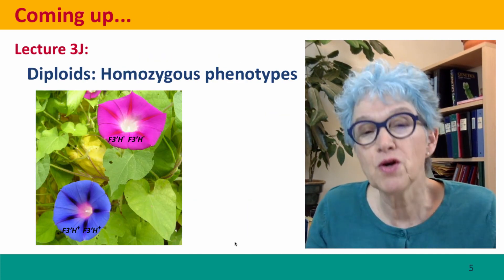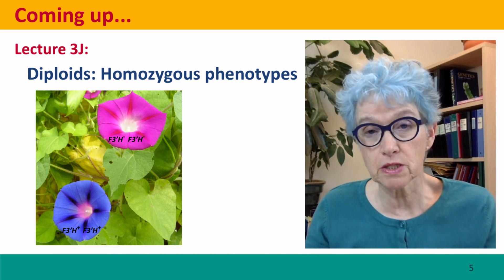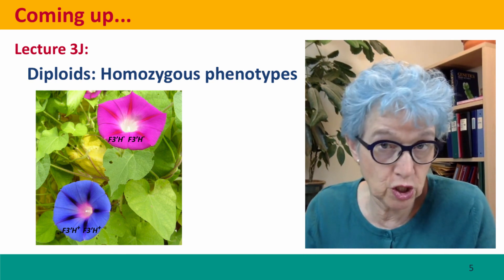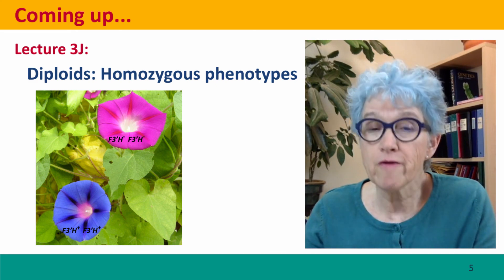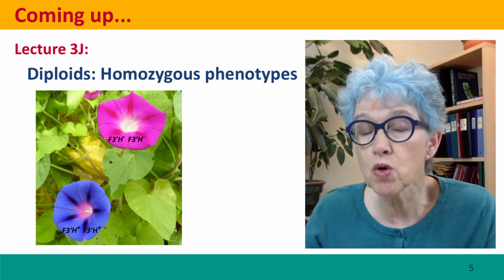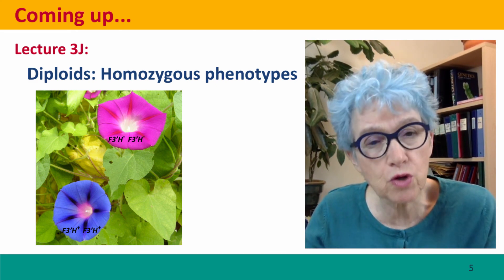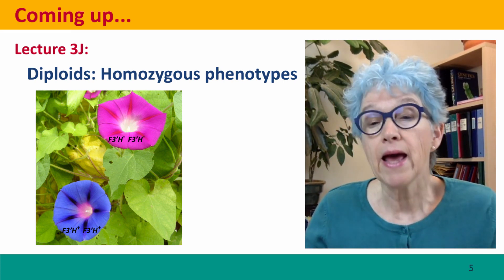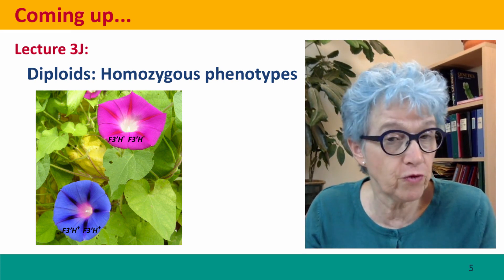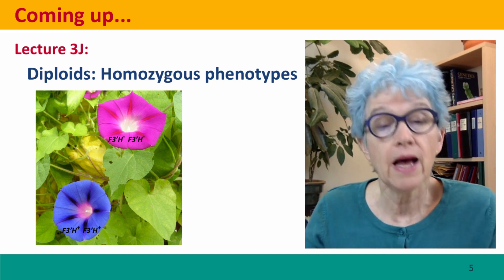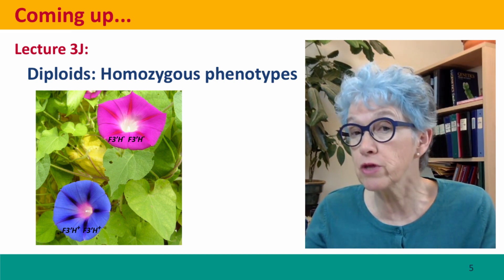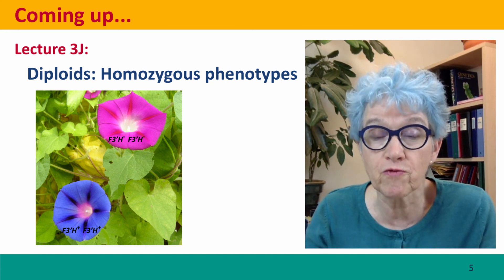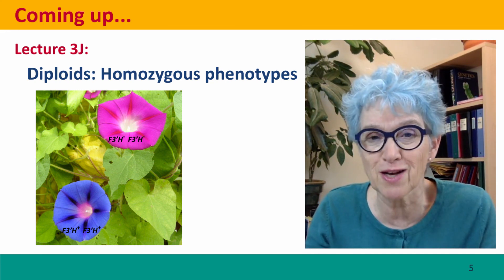Coming up next, we're going to start talking about diploids. We're going to think about how these ideas about what genes do fit into what happens when we have two copies of every gene. We're going to think first about the phenotypes of homozygotes, and then about how interactions between alleles produce the phenotypes in heterozygotes.